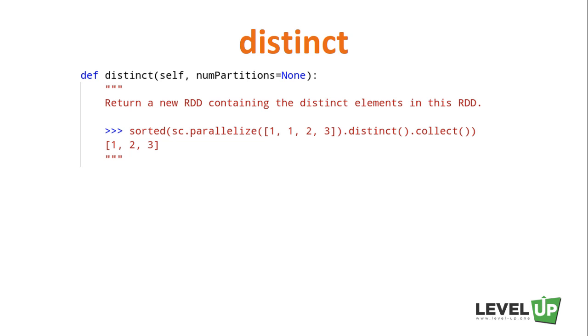Next, we'll talk about the distinct operation. The set property which is often missing from RDDs is the uniqueness of elements, as our RDDs often have duplicates. The distinct transformation would just return the distinct rows from the input RDD.